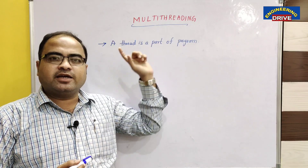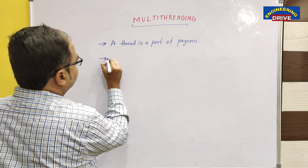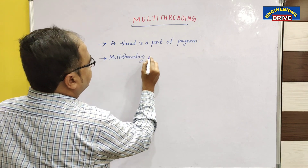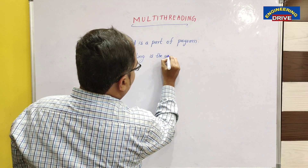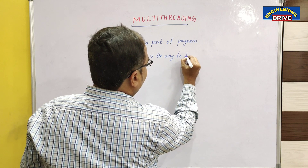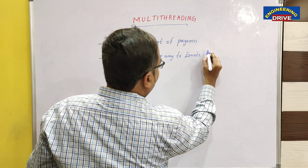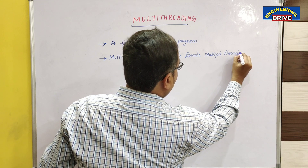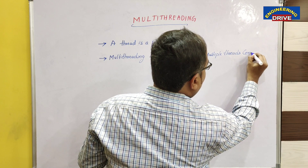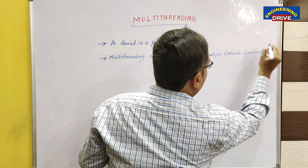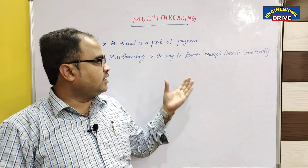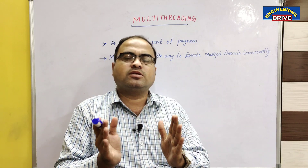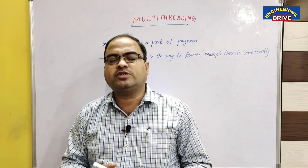Now, what is multithreading? Multithreading is the way to execute multiple threads concurrently. So, dear students, what we do is take one Java program, divide that Java program into small parts. We call those individual parts as threads, and we run those individual parts simultaneously or concurrently. We call this concept as multithreading.